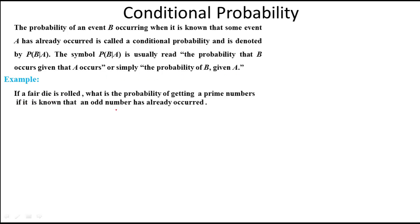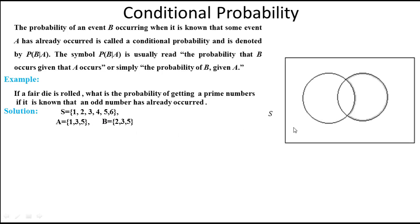Suppose a fair die is rolled. What is the probability of getting a prime number if it is known that an odd number has already occurred? Here S is the sample space, A is the event of an odd number, and B is the event of a prime number. We show the sample space, event A, and event B with the help of Venn diagrams, where S is represented by a rectangle, and each event by a circle.